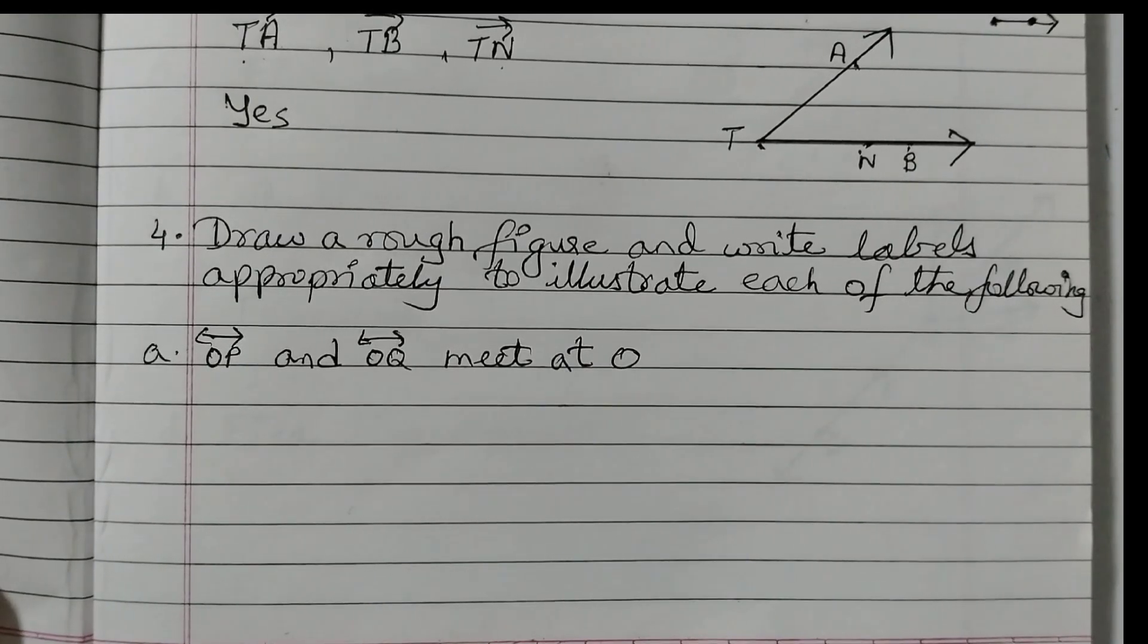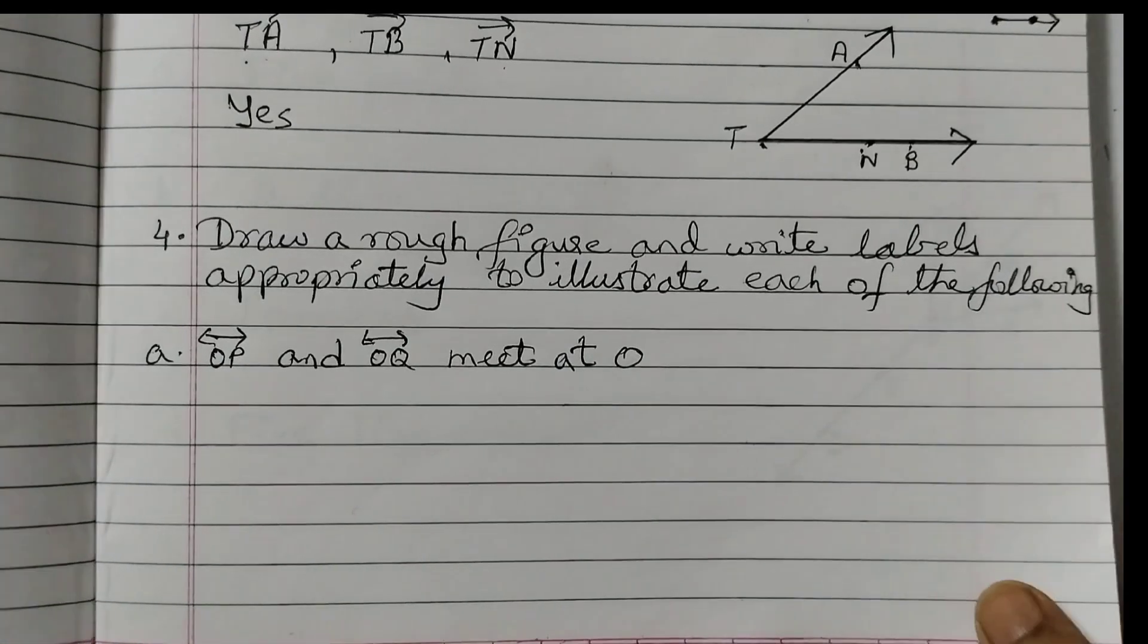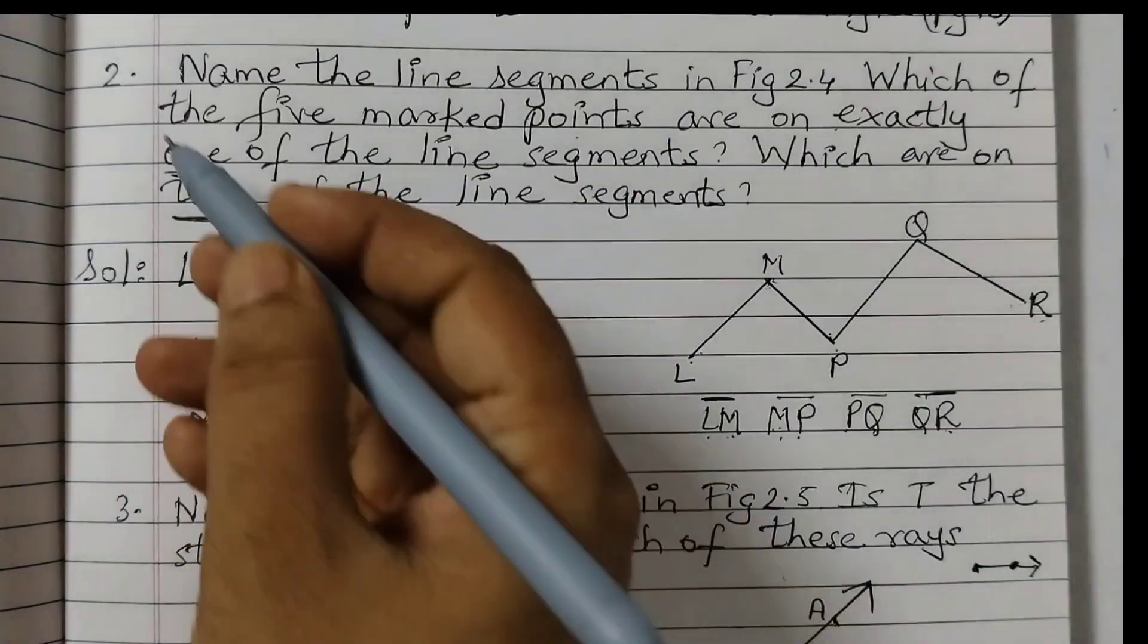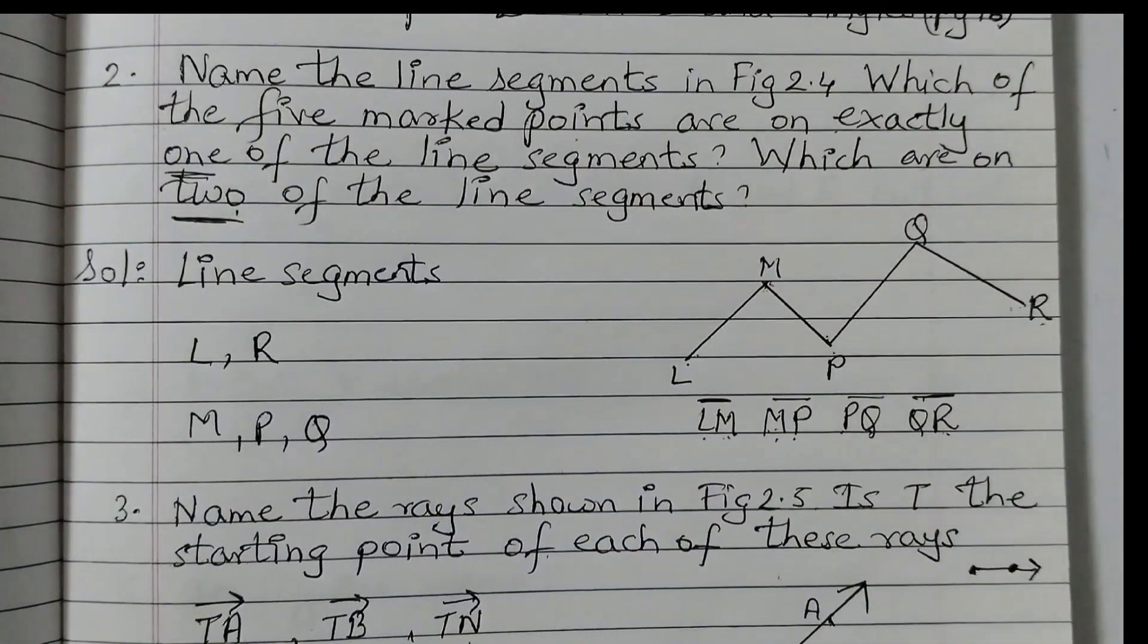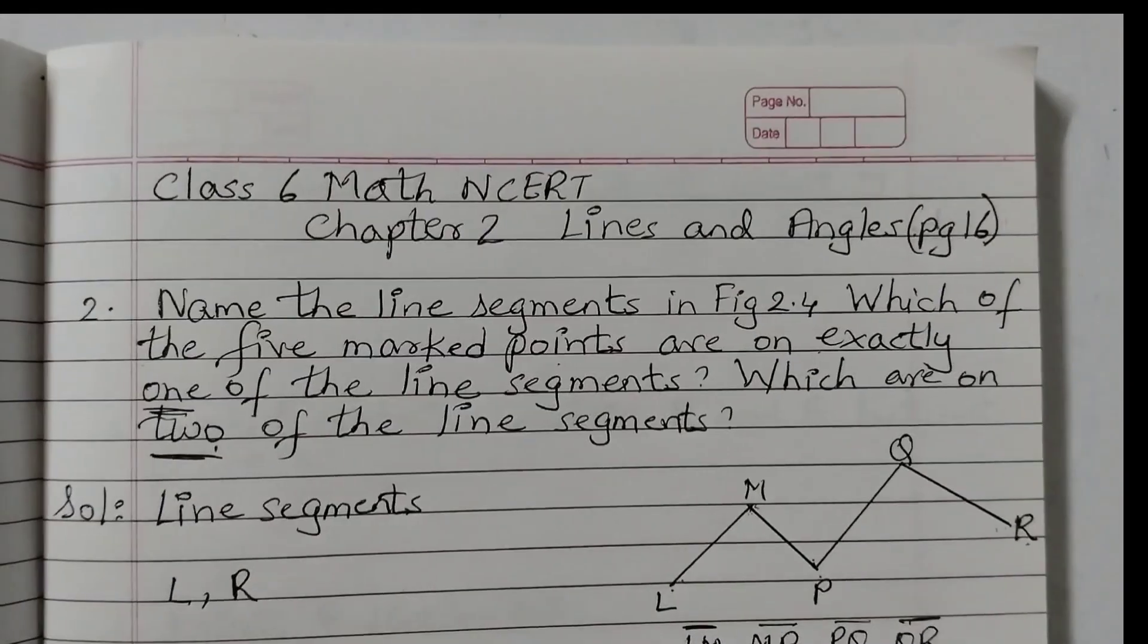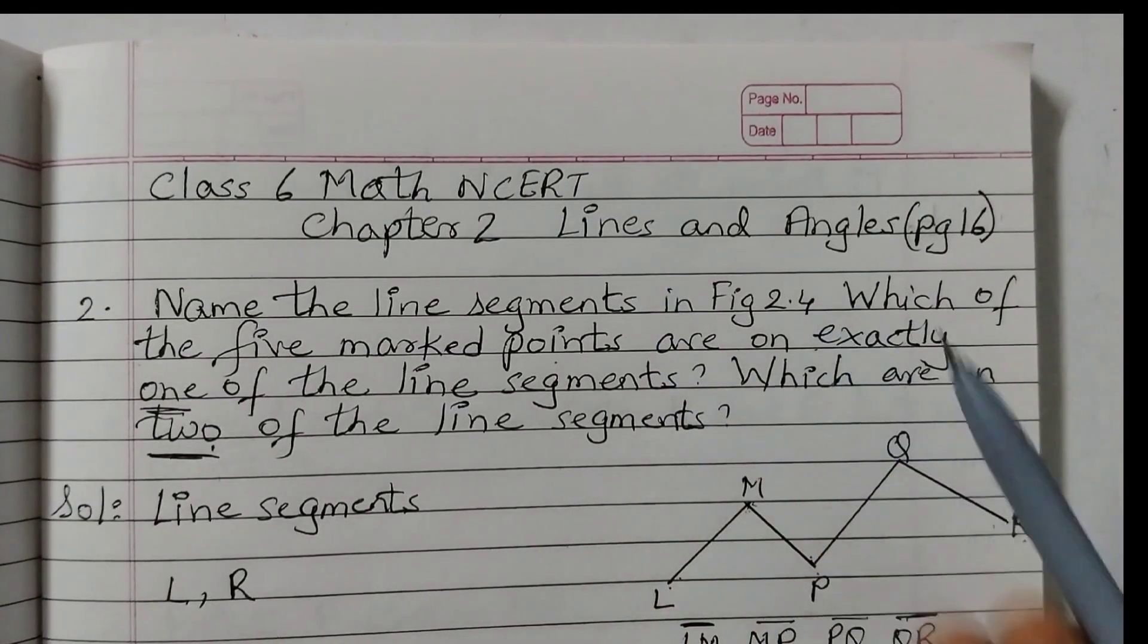Hello students! Welcome back to Rosiematt's class. In our previous video we completed question number 2 and question number 3. Now we are going to start with question number 4 onwards and this is from chapter number 2, Lines and Angles.